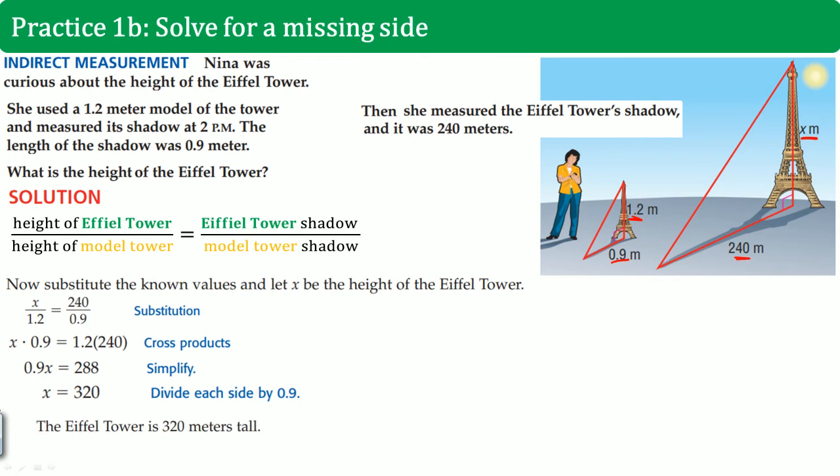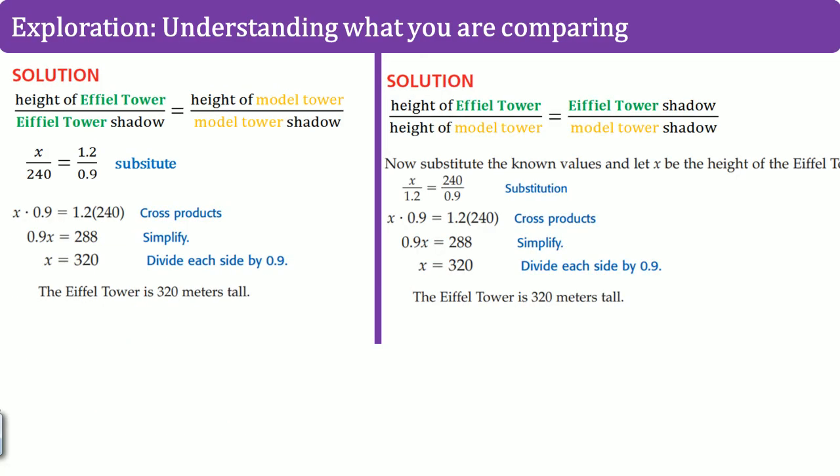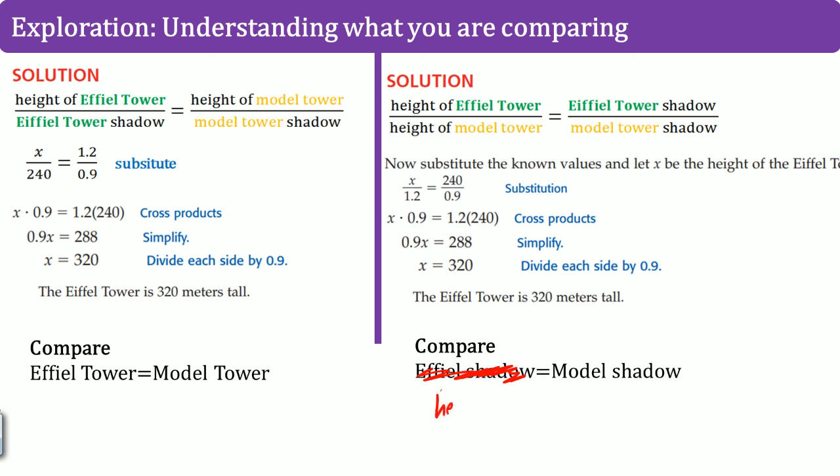You got the same answer. I want you to explore this idea comparing these two. This was the first way I did it, and this is the second way I did it. The first way, I actually compared the Eiffel Tower equals the model tower. This was what I was comparing. In the second way, I compared the Eiffel Tower shadow. No, I went tower. The Eiffel Tower, sorry. I went here. I went from the height, and then I went into shadow. That's what my comparison was. Do you see that?